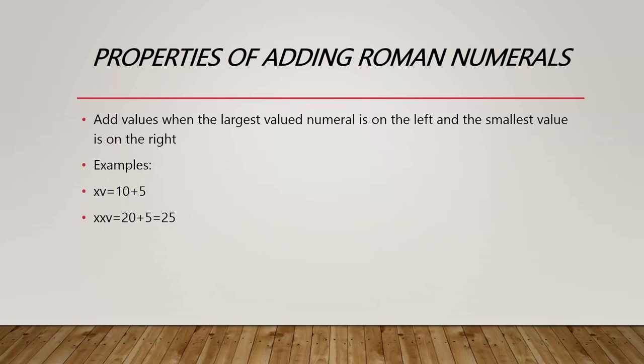For XXXV, we have XX which is 20, and V which is 5, so it's 25. Basically, I took the values from the table and translated them into numbers. That's how I translate Roman numerals.